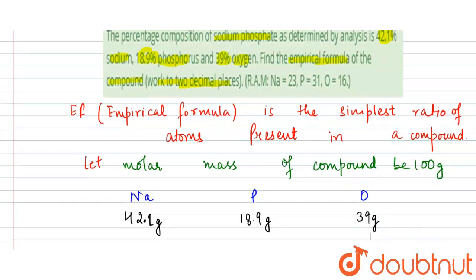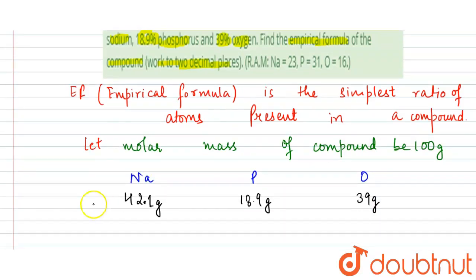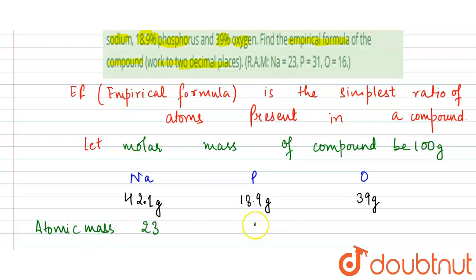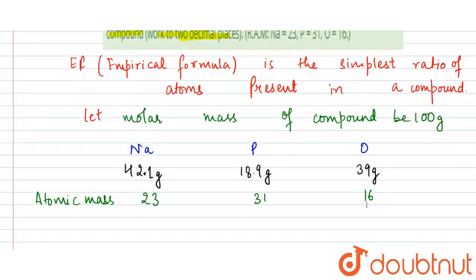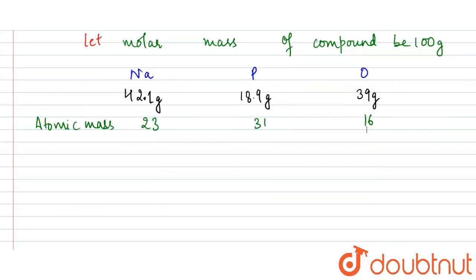We are also given their atomic masses. The atomic mass of sodium is 23, phosphorus is 31, and oxygen is 16.